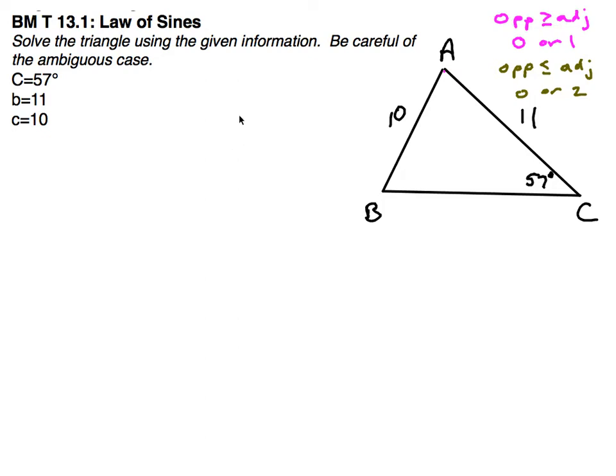Any time we have that case, we need to be careful of what's called the ambiguous case. There's a possibility that we have two solutions. I wrote down when to watch out for those. If the opposite side is greater than or equal to the adjacent side, we could have either zero or one triangle formed. If the opposite side is less than or equal to the adjacent side, we'll either have zero or two solutions for our triangle.